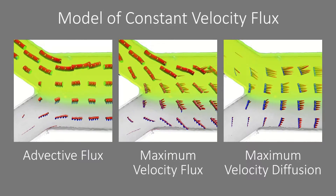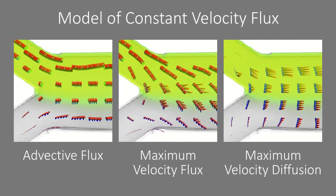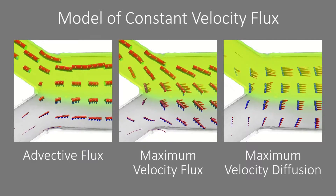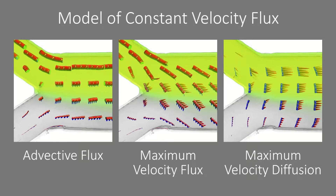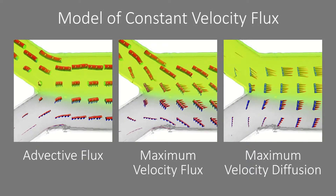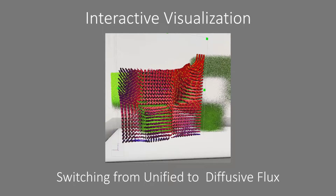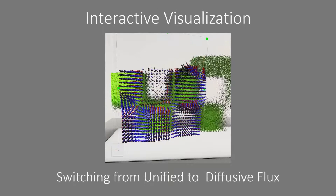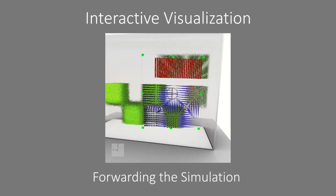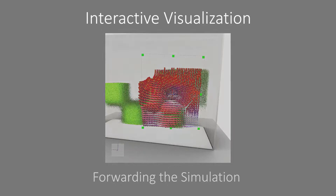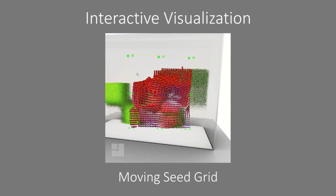Our model of constant velocity flux extends the model of total flux. It allows tracing fluxes in the direction of superimposed velocities, following the flux in the direction of fastest concentration spreading. Our system is able to interactively compute and visualize streamlines directly from raw simulation data. Streamlines can be seeded from a freely controllable planar grid.